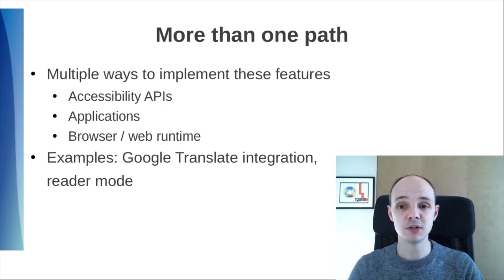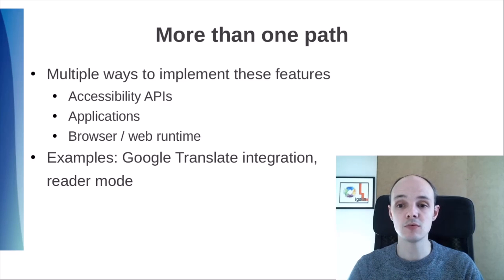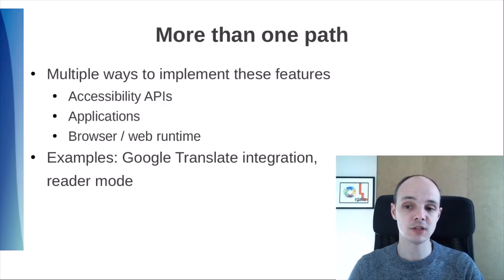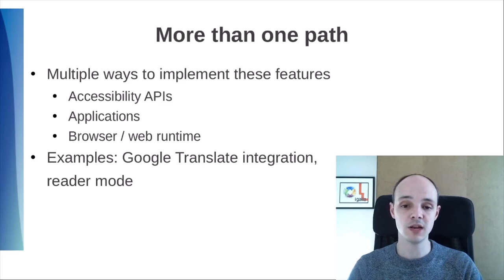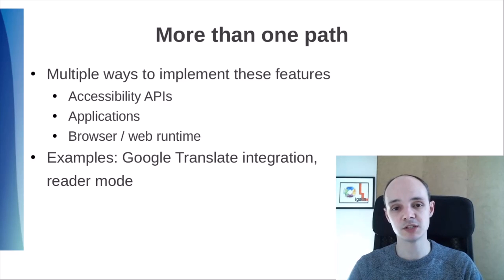There are, of course, multiple ways to implement these features. We can make them work through accessibility APIs, as we have mentioned, or we could implement specific applications that have voice control, text-to-speech, etc. We could even modify the browser engine to implement some of them. Think, for example, on how Chrome integrates with Google Translate services, or the reader mode available in most browsers that strips non-content parts of the website.